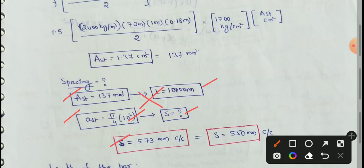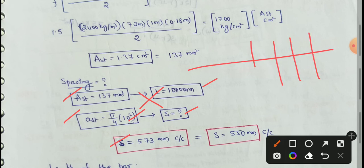If we simplify, the value comes to 173 mm. Spacing is equal to the tie bars along the longitudinal joints. The spacing is equal to 573 mm.